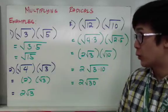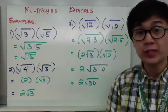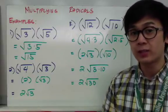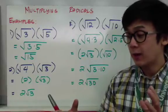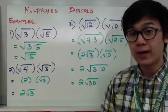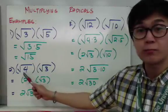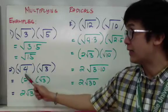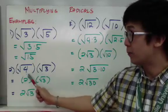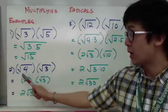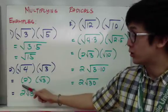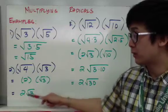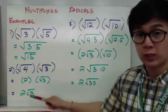For example 2, square root of 4 times square root of 3: instead of multiplying the radicands, since square root of 4 is 2, I simply simplify it to 2 and combine it with the radical expression, giving 2 square root of 3. This is a useful technique when one radical is a perfect square.